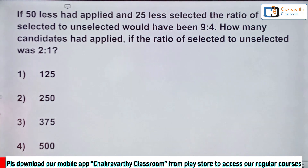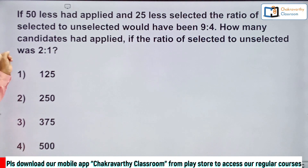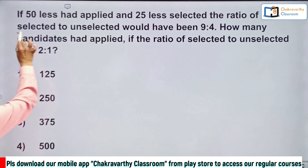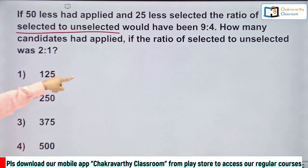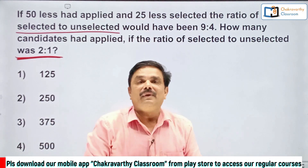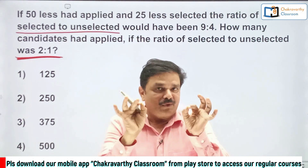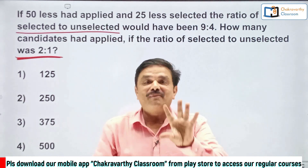Let's go for this one. Read the question properly — that's the first step. Make the problem into two parts: information and question. What have they given? If 50 less had applied and 25 less were selected, the ratio of selected to unselected would have been 9:4. How many candidates had applied if the ratio of selected to unselected was originally 2:1? This is a good question, but a very simple one — it can be done within a maximum of 5 seconds.